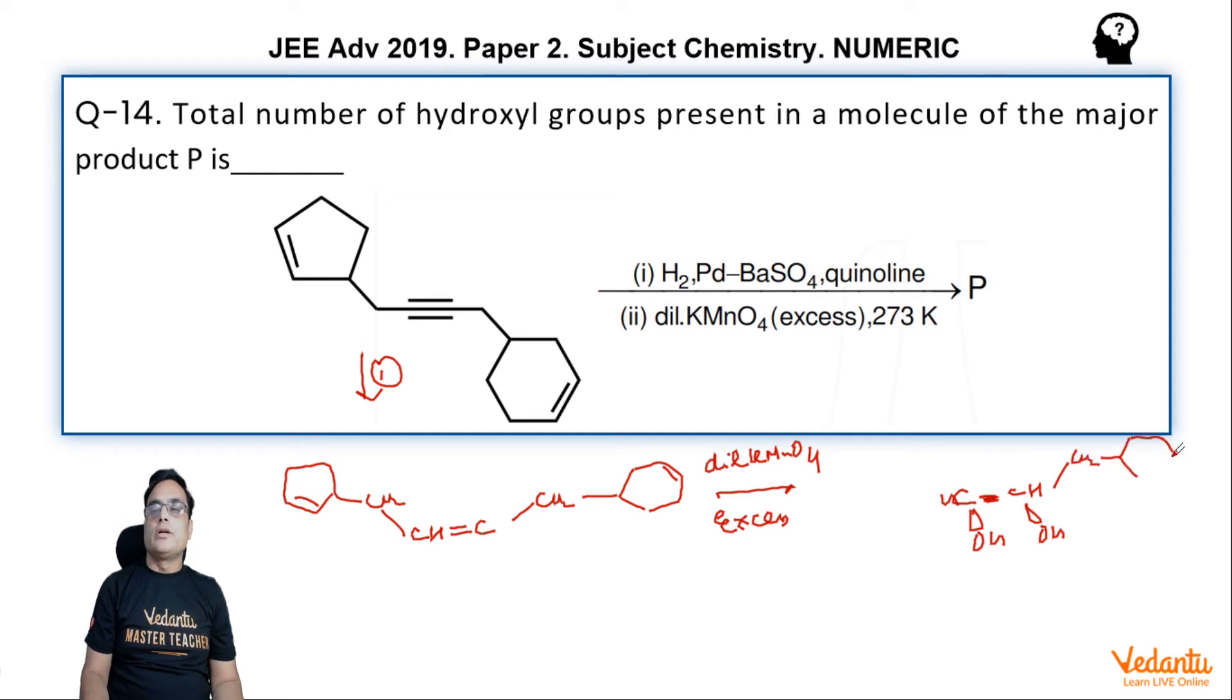Six-membered ring, and the six-membered ring is having one double bond, so this OH and this OH, right?